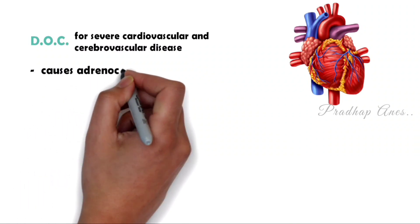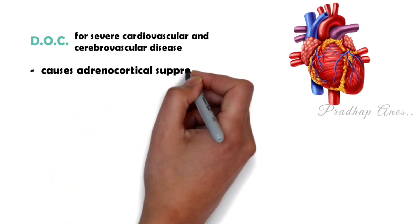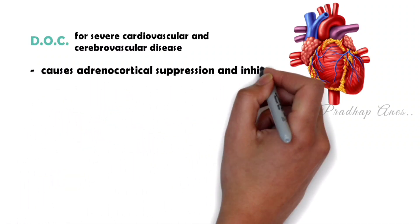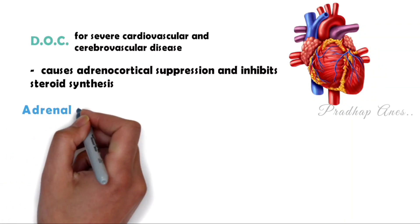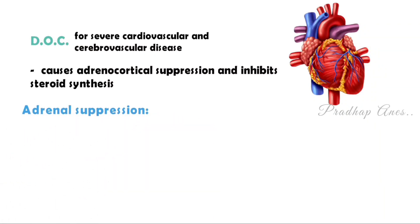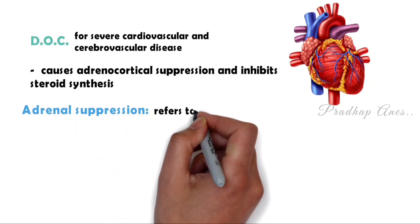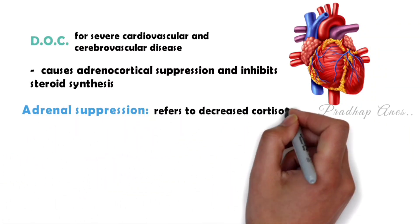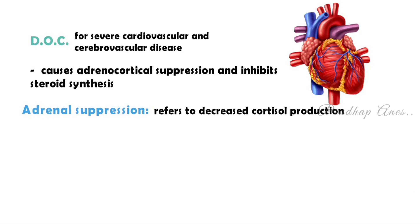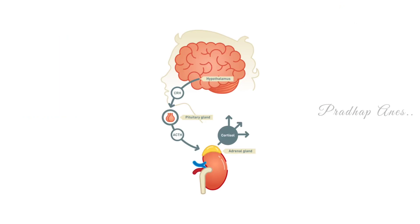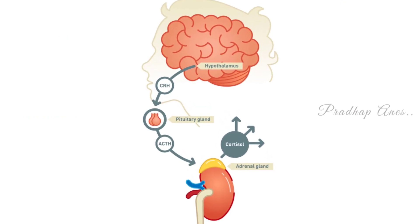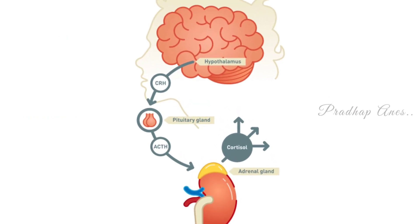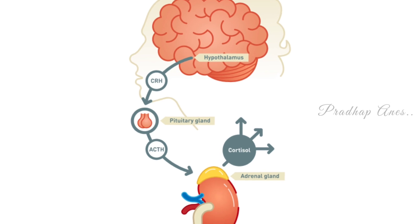Etomidate causes adrenocortical suppression and inhibits steroid synthesis. Adrenal suppression refers to decreased cortisol production as a result of negative feedback on the hypothalamic-pituitary-adrenal axis, caused by excess glucocorticoids.